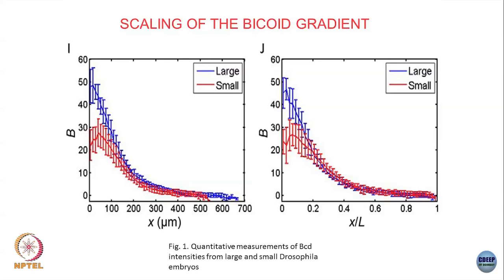The lambdas are different, which you can see. But if you scale the x-axis by the length of the embryo itself, so it goes from 0 to 1, then the two curves collapse on top of each other. This basically tells you that this lambda, even within a single species, is proportional to L.